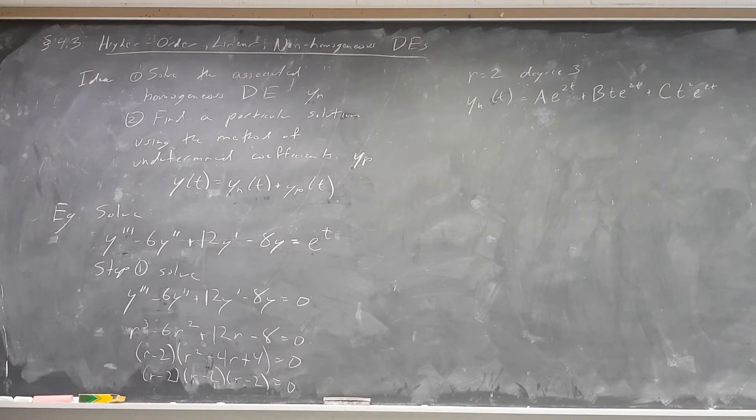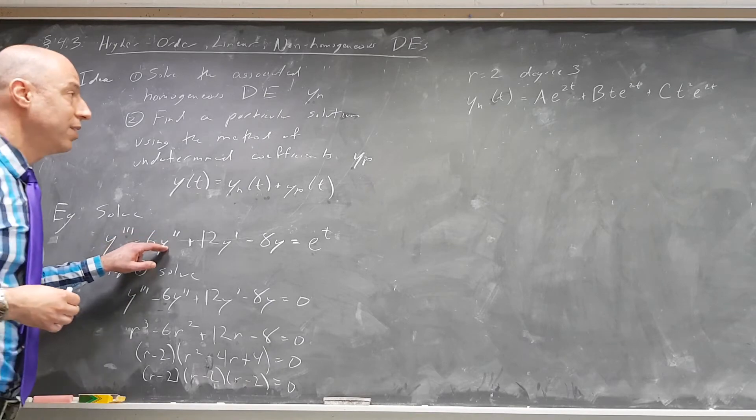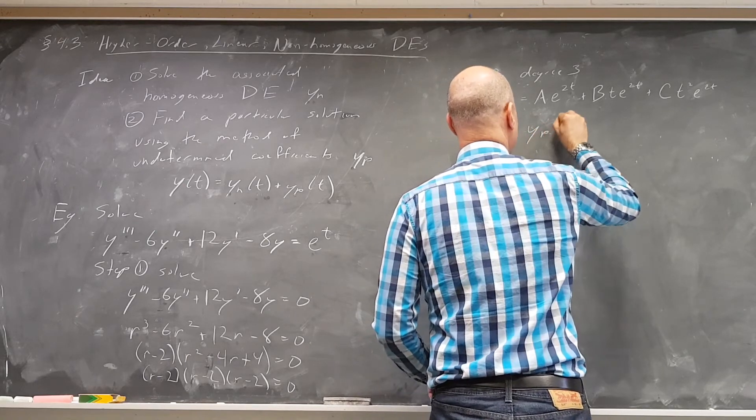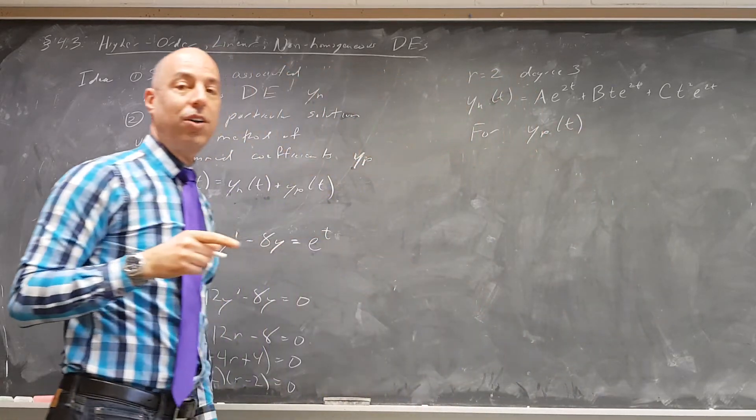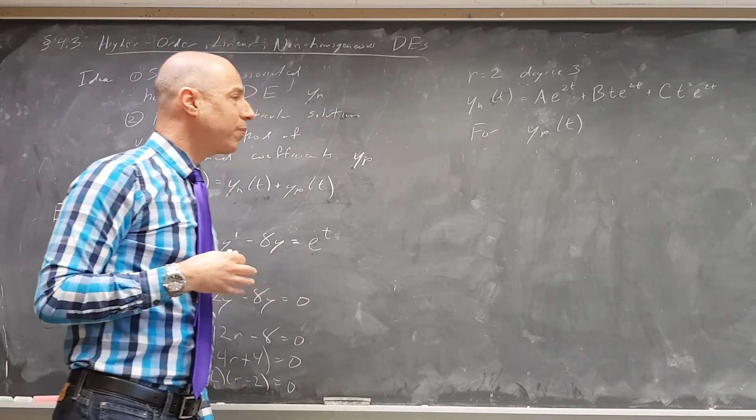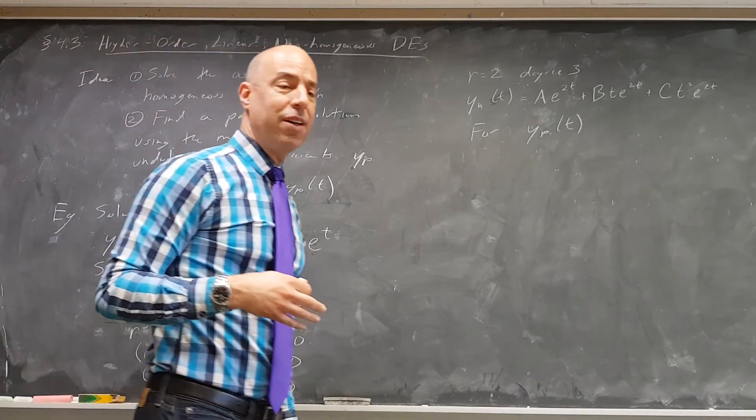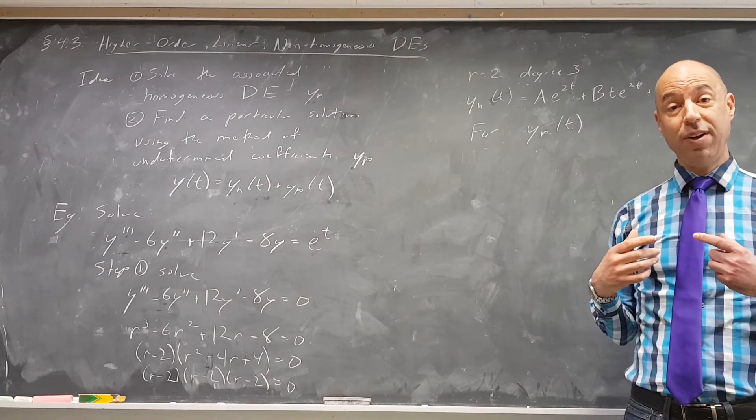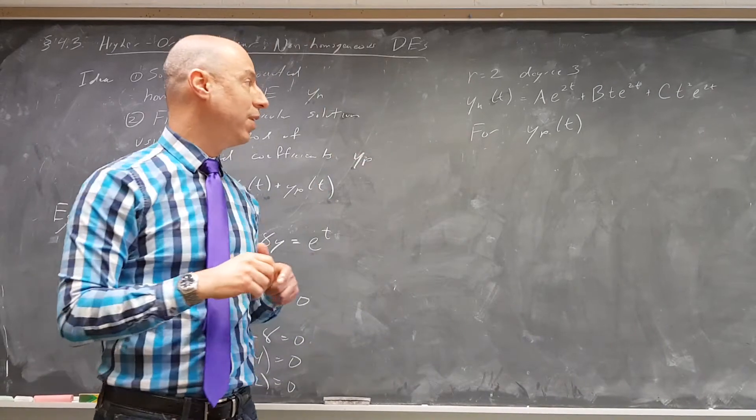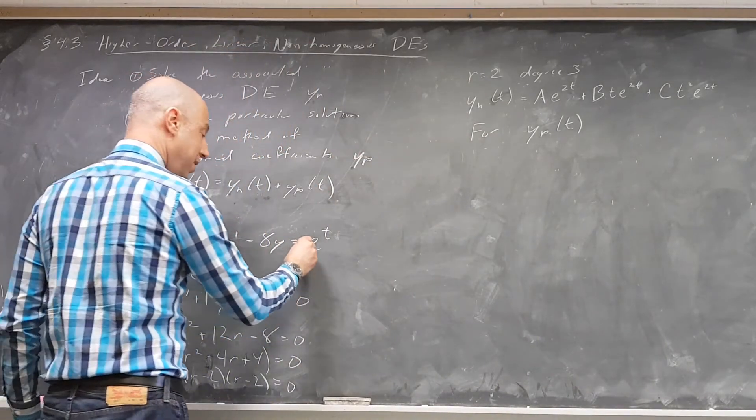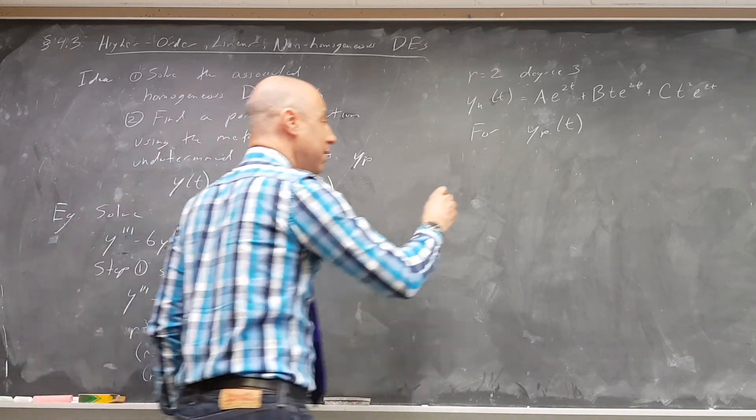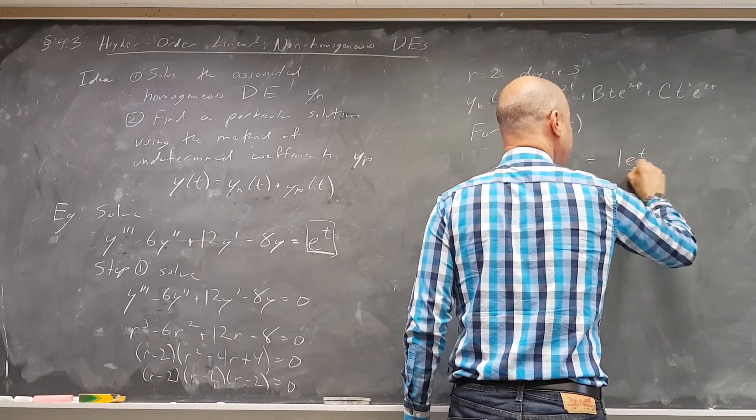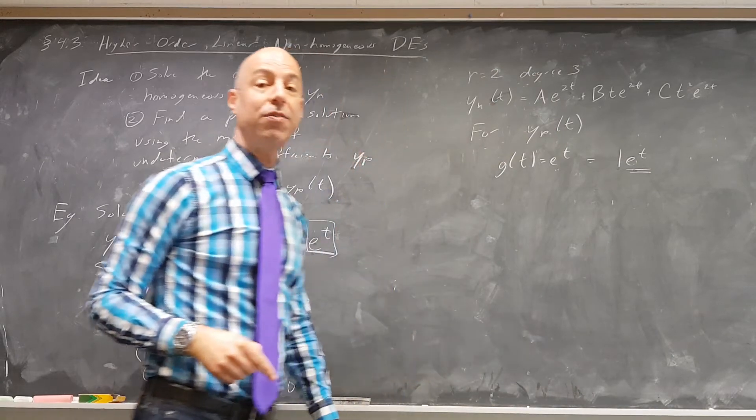Now it's time to go ahead and take a look at the particular solution to this. So for y sub p of t, we consult that chart that's both in your textbook and also at the beginning of, also in the lecture notes from last Wednesday's lecture, the first video lecture that I gave, I gave you a bunch of notes, including a table. And so we can see that, oops, this g of t, which is e to the t, is basically just 1 times e to the t. So it's an exponential times a polynomial of degree 0.